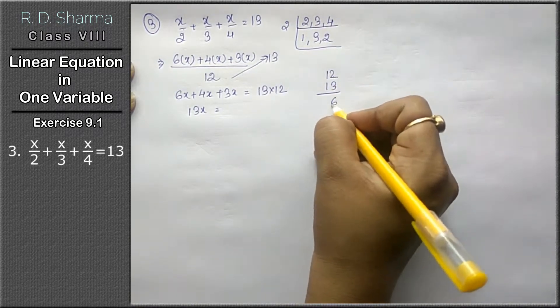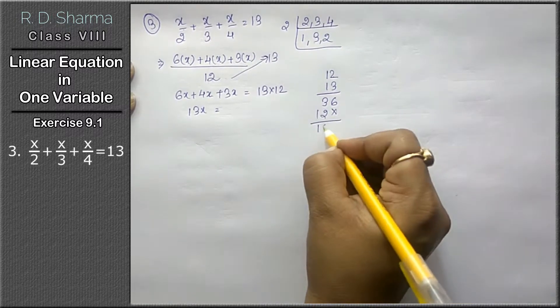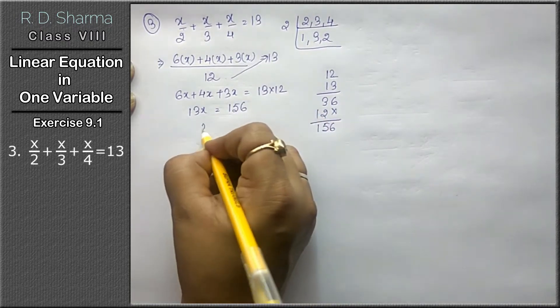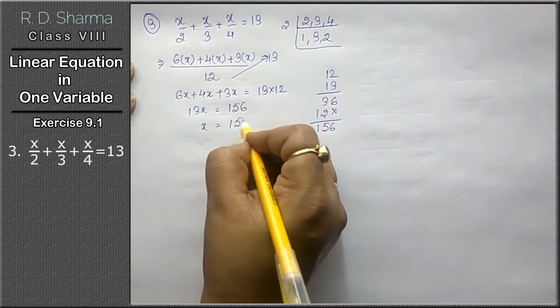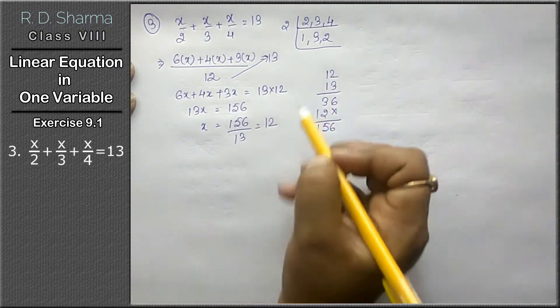Calculating 12 times 13: 3 times 2 is 6, 3 times 2 and 1, gives us 156. So 13x equals 156 divided by 13, that means x equals 12 is the answer.